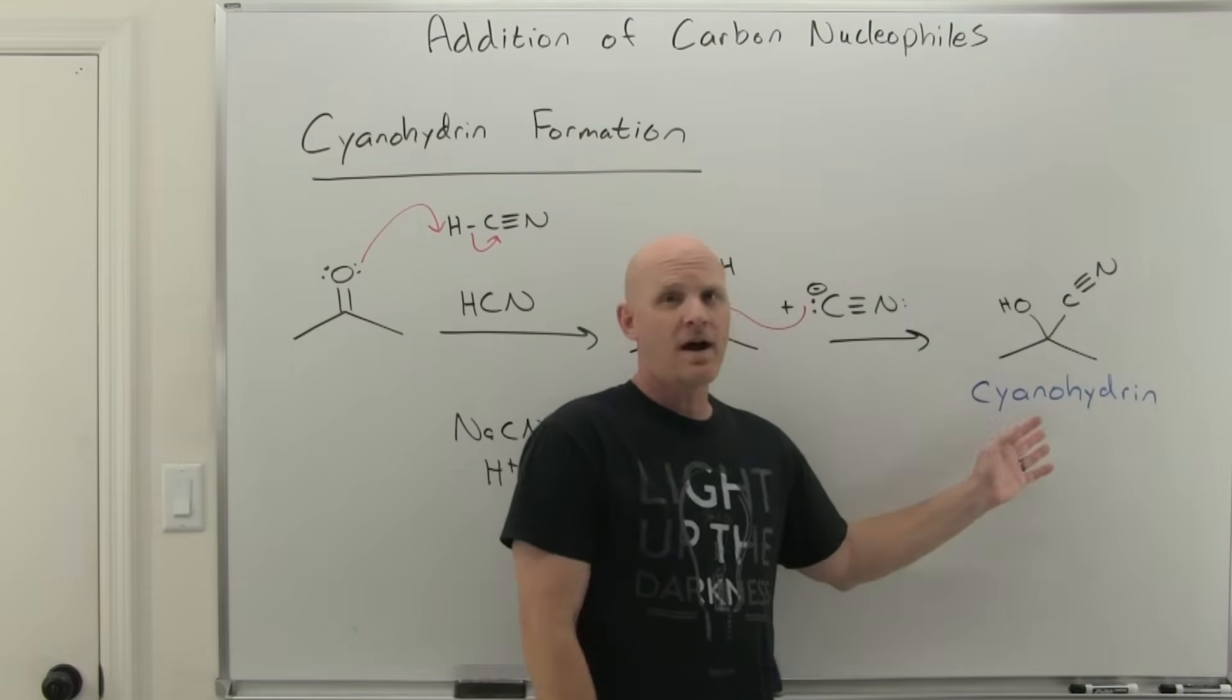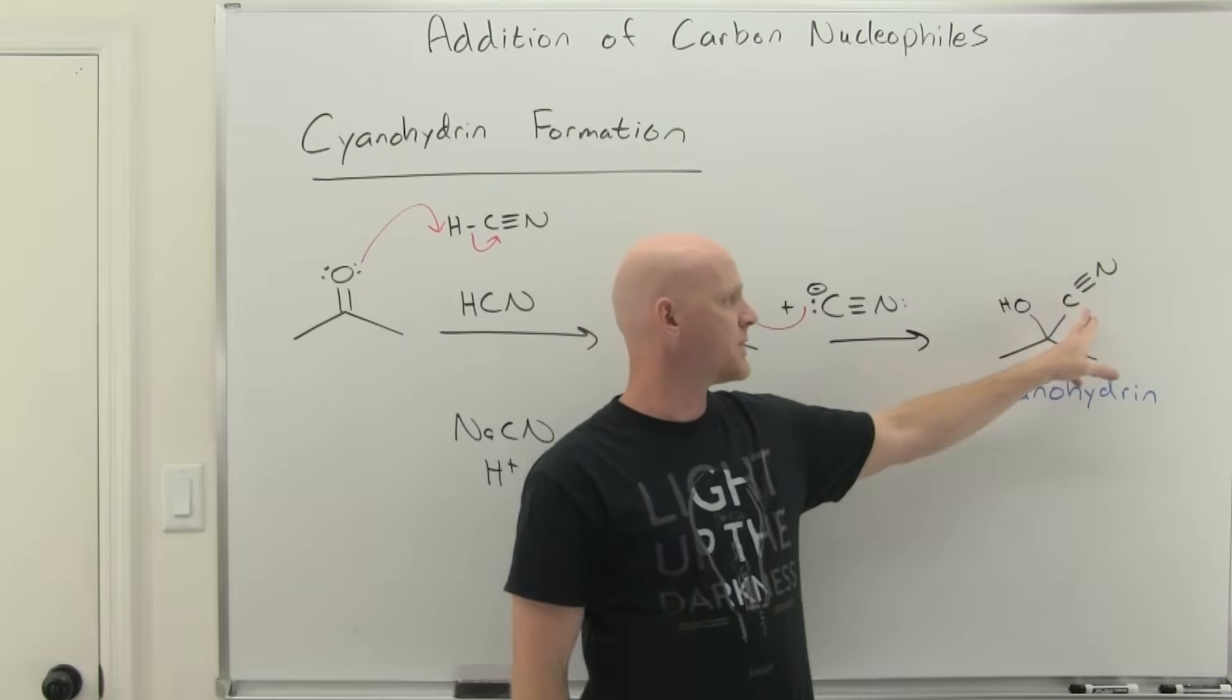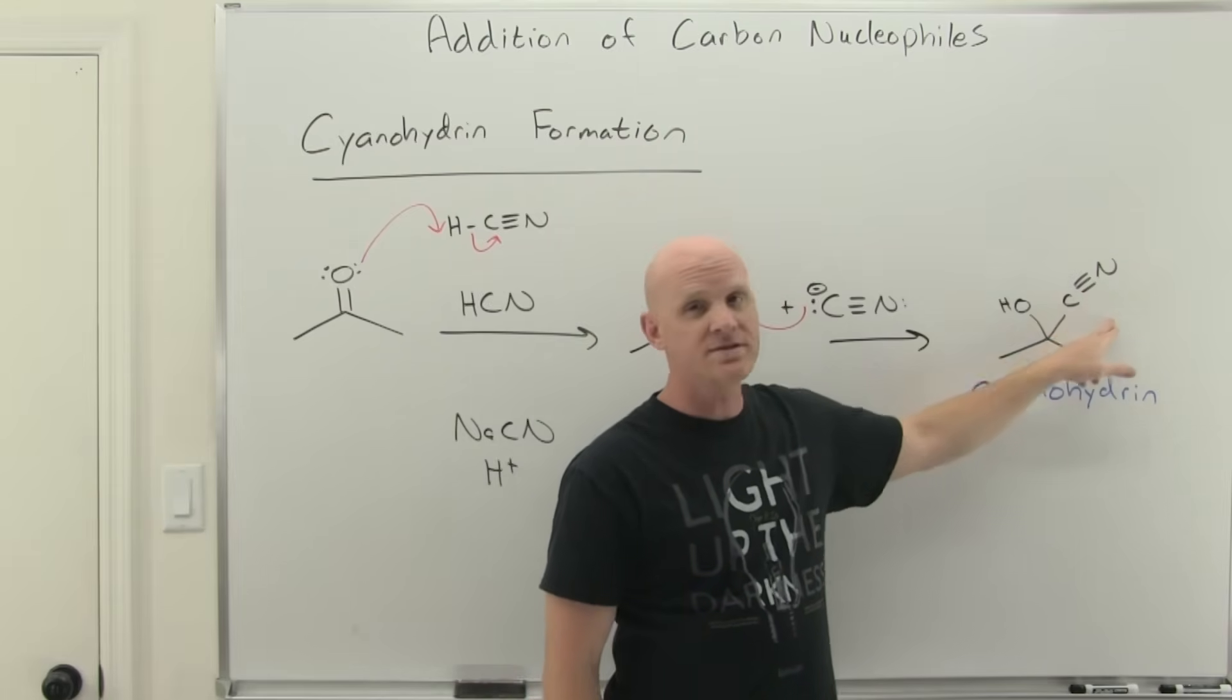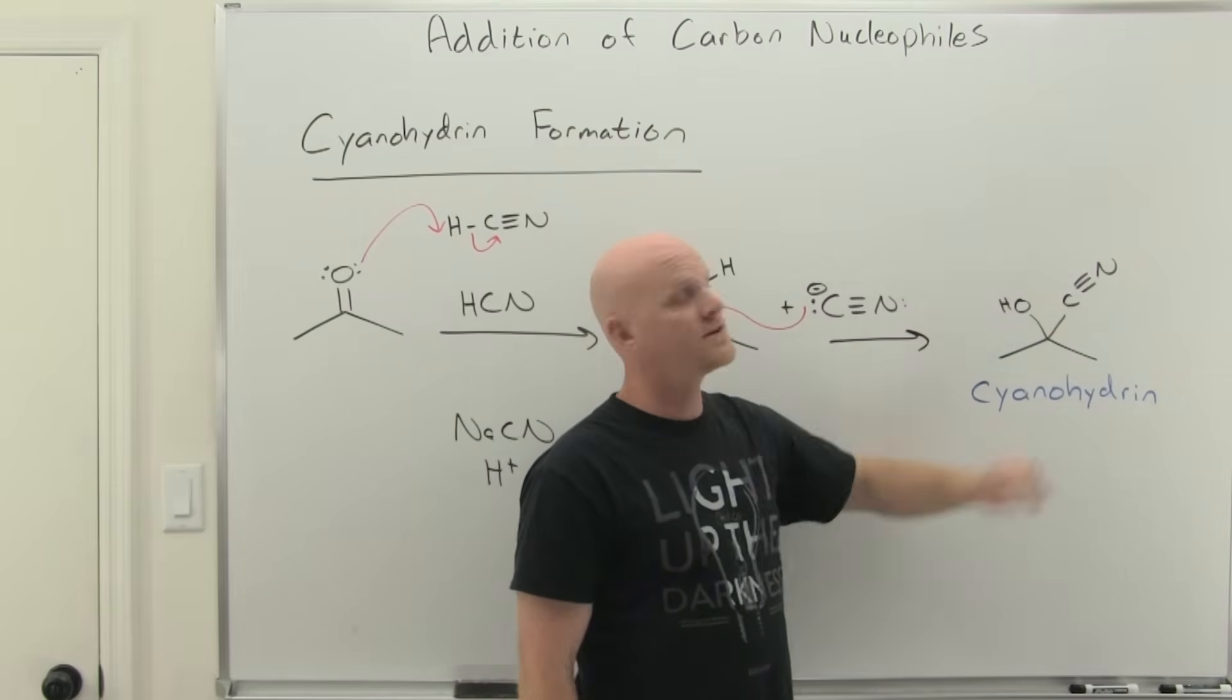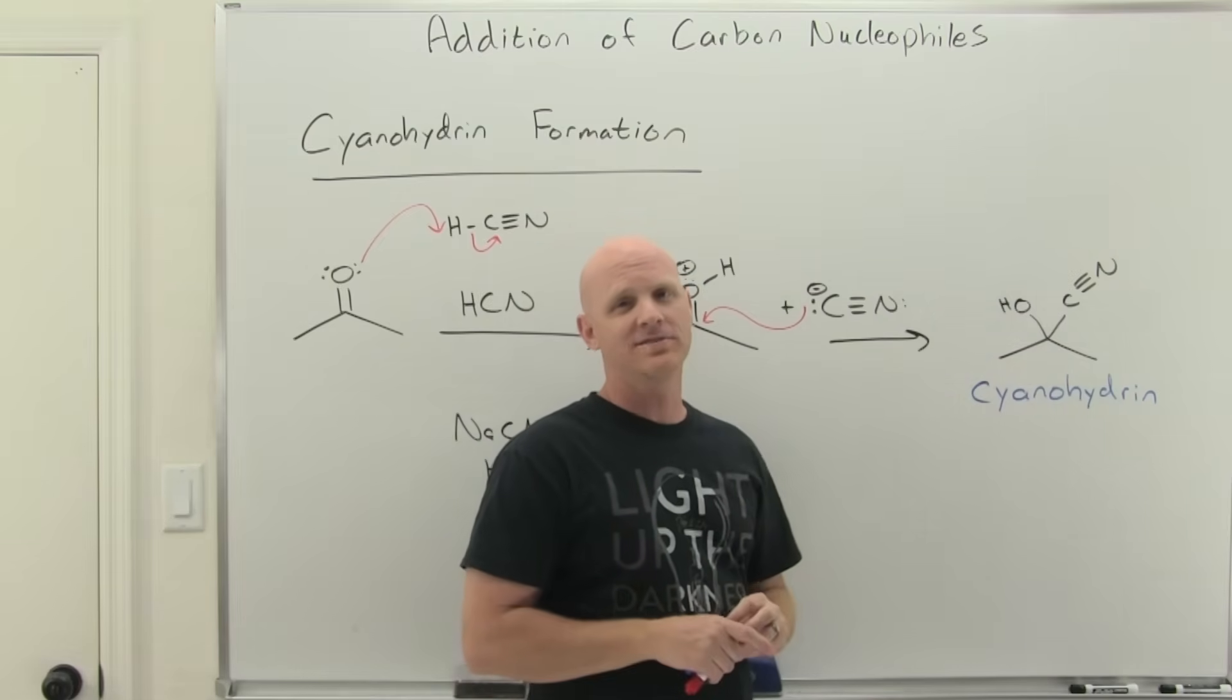And these are not going to be the most synthetically useful things now. But in the future, we'll learn that we can turn these cyanohydrin groups, they're called nitriles as a functional group, into carboxylic acids. And so these may have some utility later on in forming carboxylic acids.